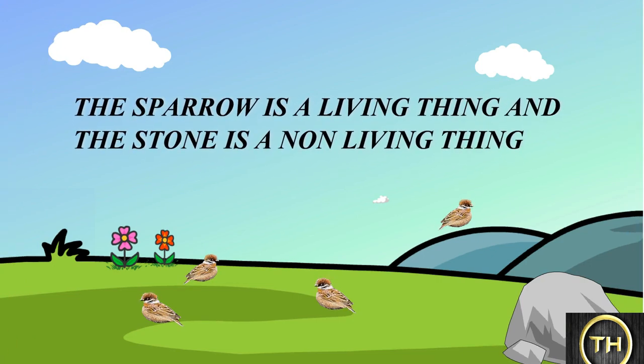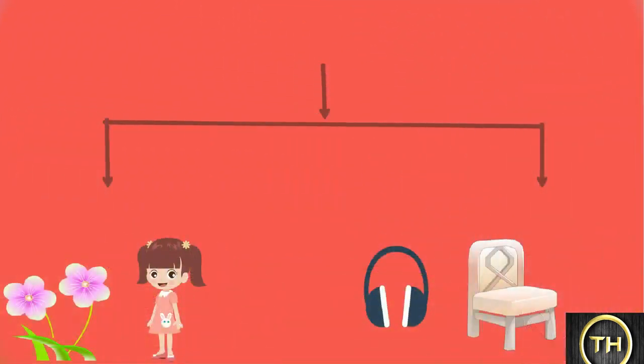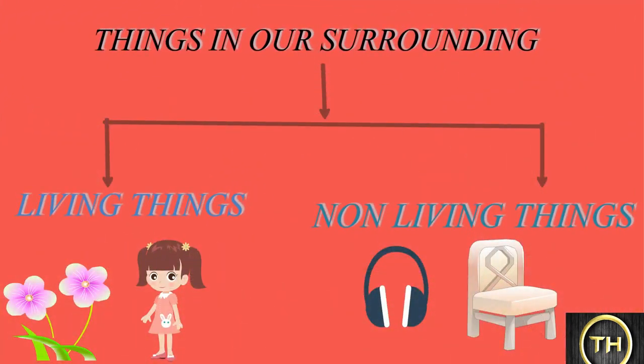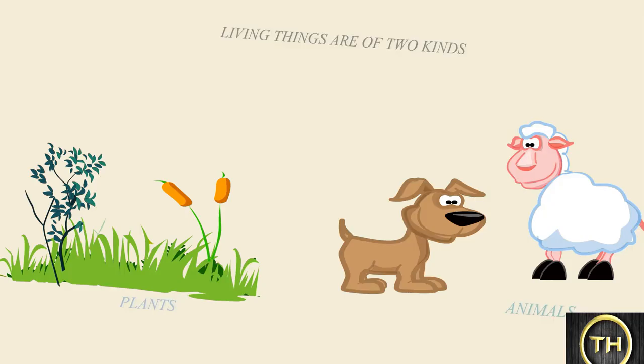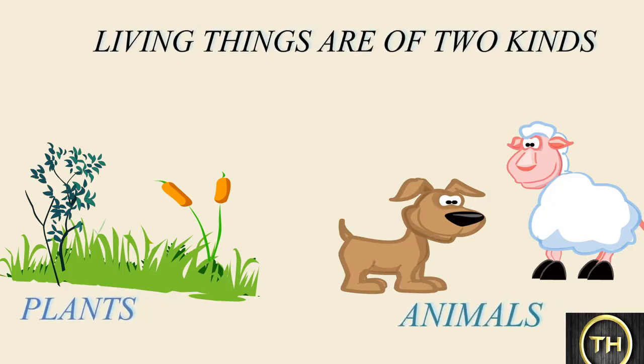Why do we see these differences between the sparrow and stone? The sparrow is a living thing and the stone is a non-living thing. Things in our surroundings form two groups: living things and non-living things.